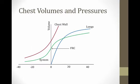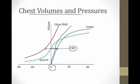To help understand the barrel chest, recall the graph of chest volumes and pressures. The FRC — functional residual capacity — is the volume the lungs settle on after a quiet breath, and it's the point where the lung-chest wall pressure curve crosses the zero pressure mark. At the FRC, the tendency of the chest wall to expand outwards is balanced by the tendency of the lungs to collapse inwards. In patients with emphysema, the elastic recoil of the lungs decreases, so the FRC moves up to a higher volume. Thus, you have a higher volume at the end of a quiet breath, and that's why you get the barrel chest.